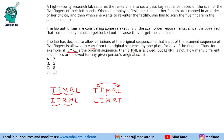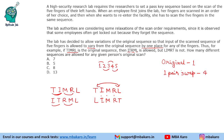Again, we start with one original. Then we can have one pair swap of adjacent fingers. Using positions 1, 2, 3, 4, 5: we can swap 1 and 2, swap 2 and 3, swap 3 and 4, or swap 4 and 5 — giving four ways to swap one adjacent pair.